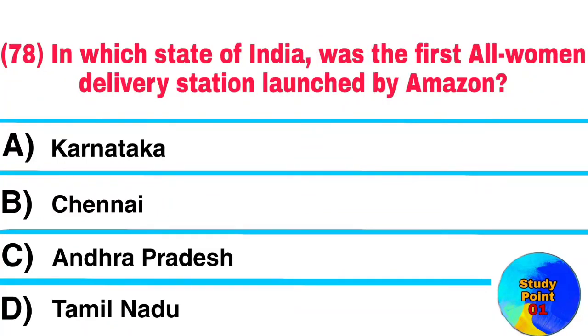Question No. 78. In which state of India was the first all-women delivery station launched by Amazon? Answer: Chennai.